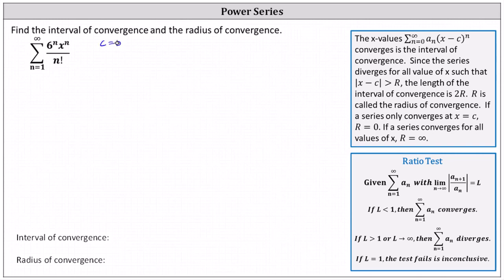The x values for which a power series converges is the interval of convergence. Since the series diverges for all values of x such that the absolute value of x minus c is greater than r, the length of the interval of convergence is 2r, and r is called the radius of convergence.